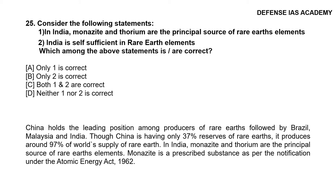Question 25: Consider the following statements: 1. In India, monazite and thorium are the principal sources of rare earth elements; 2. India is self-sufficient in rare earth elements. The correct option is option A, only statement 1 is correct. China holds the leading position among producers of rare earth followed by Brazil, Malaysia and India. Though China has only 37% of reserves, it produces around 97% of world supply. In India, monazite and thorium are the principal sources of rare earth elements. Monazite is a prescribed substance under the Atomic Energy Act 1962.